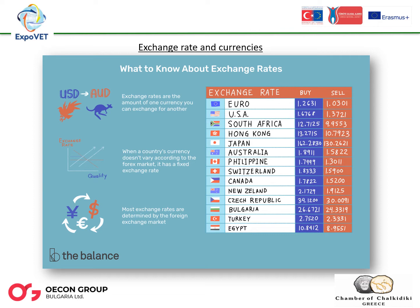Similarly, for an EU entrepreneur who imports and plans to make a payment in Japanese yen within three months, the entrepreneur can buy in advance the yen that will be needed later. This ensures safety from possible fluctuations in the yen-euro price. The yen will be delivered within three months and at that time the agreed euros will be owed. These strategic operations can be carried out regularly for periods of up to one year.